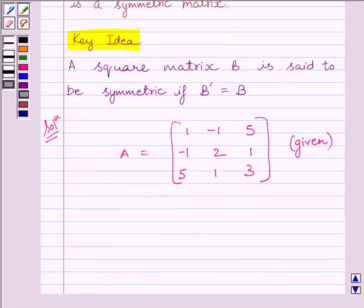Now we can obtain A transpose by interchanging the rows and columns of A. So A transpose is equal to [1, -1, 5; -1, 2, 1; 5, 1, 3].